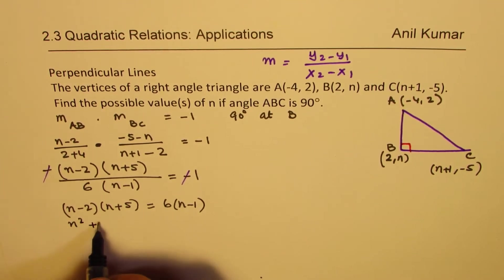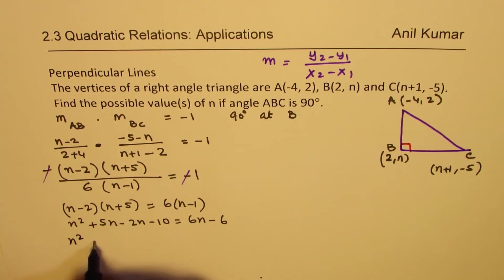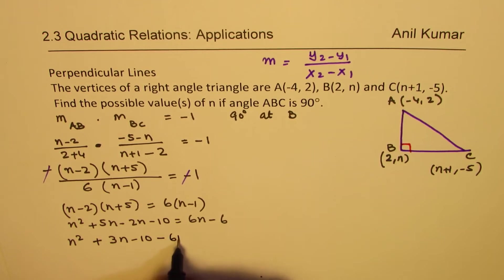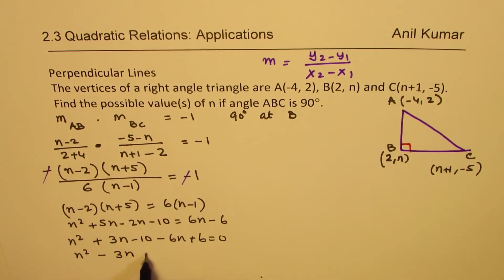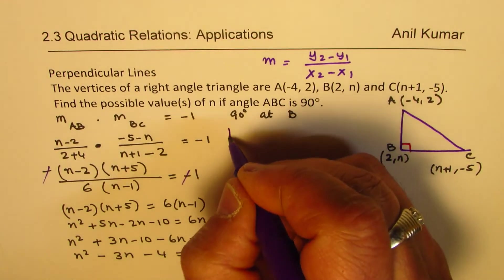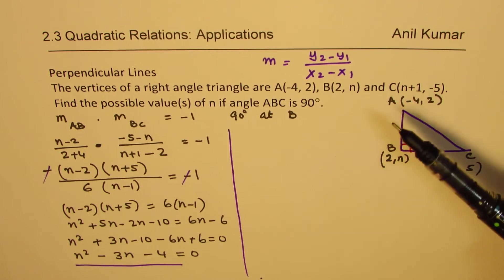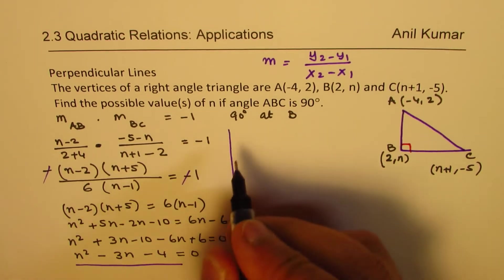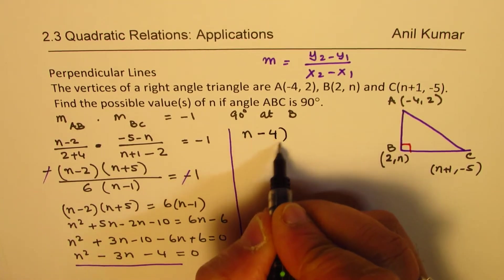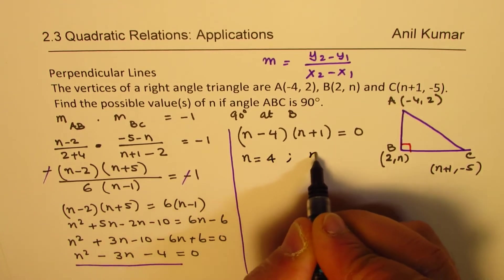This is a quadratic equation. When learning about lines, quadratic equations may not have been covered yet, but once learned, this becomes simpler. Factoring N² − 3N − 4 = 0, we look for a product of −4 and sum of −3, giving (N−4)(N+1) = 0. So N = 4 or N = −1.